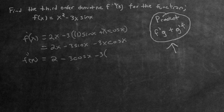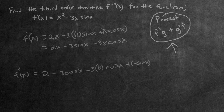Well, we have to use the product rule again. So in this case, f is going to be x, and g will be cosine x. What's the derivative of x? That's just going to be 1. Then we leave the g alone, so we just put a cosine x right here. Then we do add, and then we find the derivative of g — cosine x — which would be negative sine x. And then we leave f alone in the second part, so we just put an x right out here.